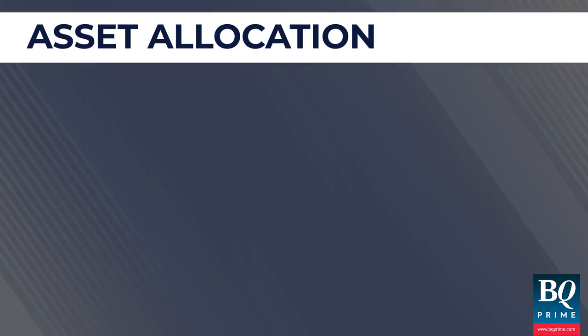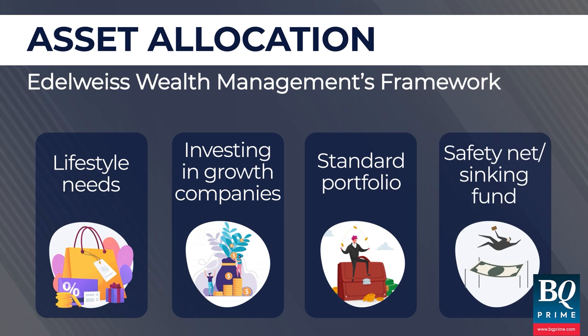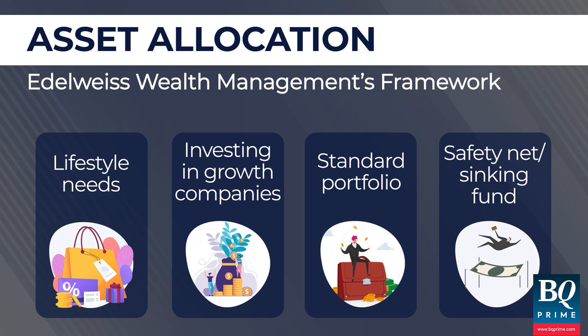The third bucket is what we call the boring or standard portfolio — nothing fancy, just investing for the long term in a moderate manner. The fourth is what we call a safety net or sinking fund: when markets go through extreme bouts of turmoil or people suffer risks in their business, they should have a safety net. So the core basic philosophy is: look at lifestyle, growth, a treasury or moderate portfolio, and your safety net — that is how we start the basic bucketing of needs.